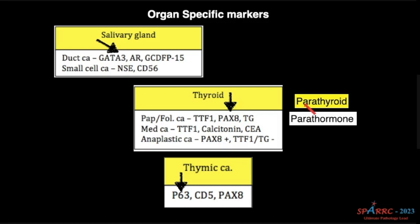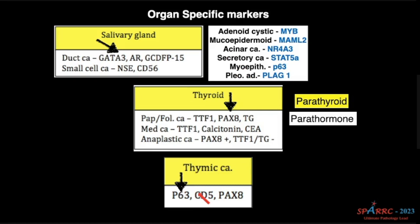For parathyroid, parathormone is the marker. And for thymic carcinoma, P63 but now GATA3. Remember this GATA3 here in ductal carcinoma of the salivary gland — that will also be positive in thymic carcinoma.